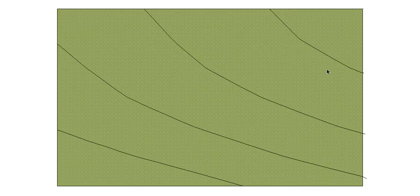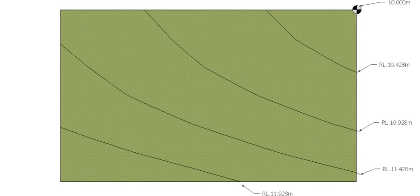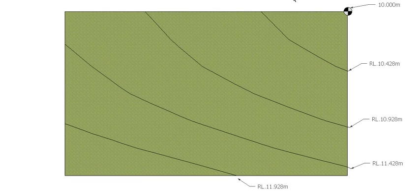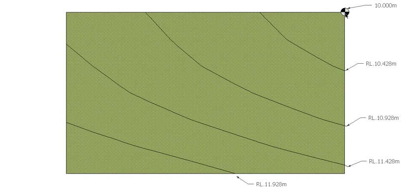So here's our site plan. Obviously our contour lines are there — they are given heights. We have our benchmark, our base height for our site, and all our contour intervals and our RLs for each of our contour lines.